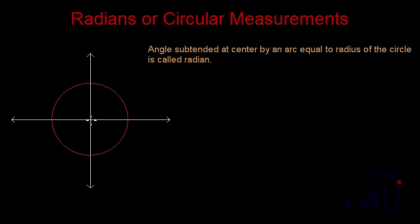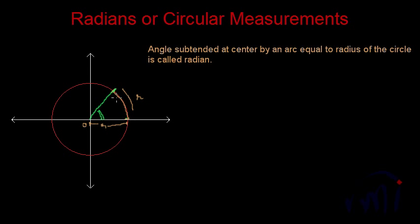Suppose this is the circle, this is the center O and this is the radius R. If I take an arc equal to the length of the radius along the circumference, and this curved length is equal to R, then the angle subtended by this arc at the center — that angle is called one radian. This length of the arc is the length along the circumference; it is not the length of the chord. This length in white is not R — it is the length along the circumference of the circle.